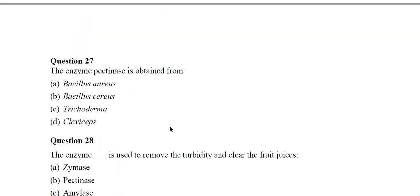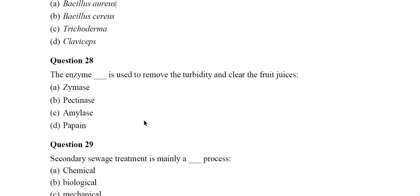Question 28: The enzyme pectinase is obtained from — the correct answer is Bacillus aureus. Question 28 also asks: the enzyme pectinase is used to remove turbidity and clear fruit juices. The correct answer is pectinase.